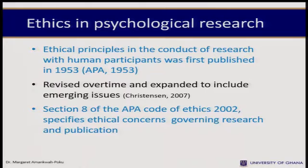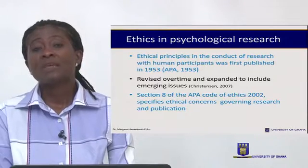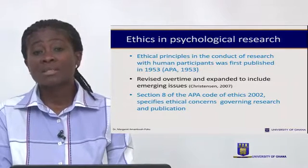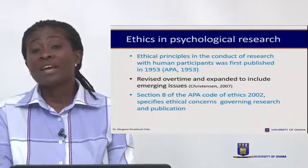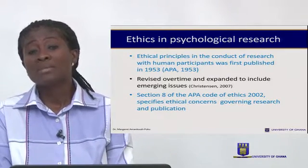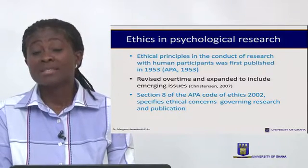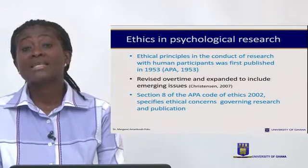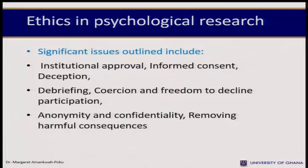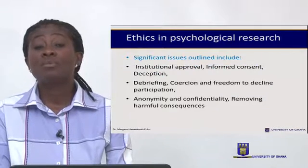Ethical principles in the conduct of research involving human participants was first published in 1953. Over the years, these guidelines have been revised. Presently we have the APA Code of Ethics 2012, but I'll refer to the 2002 because the 2012 just makes a few amendments. I'll base this lecture on the APA Code of Ethics 2002, which is Section 8. The significant issues in Section 8 are: institutional approval, informed consent, deception, debriefing, coercion and freedom to decline participation, anonymity and confidentiality, and finally, removing harmful consequences.